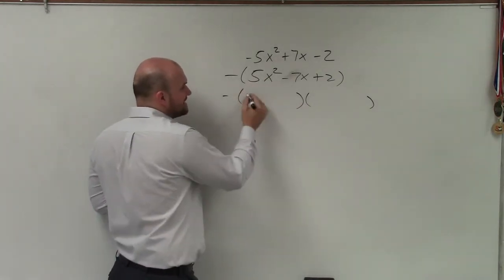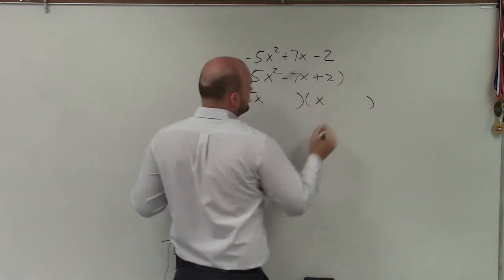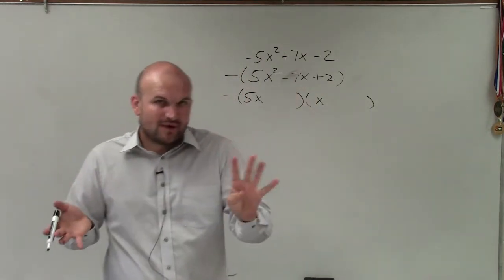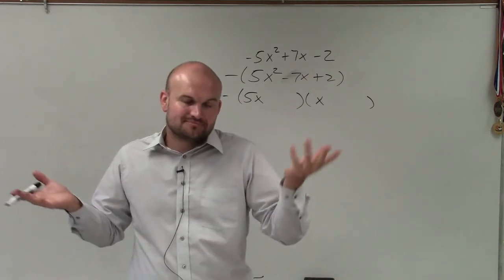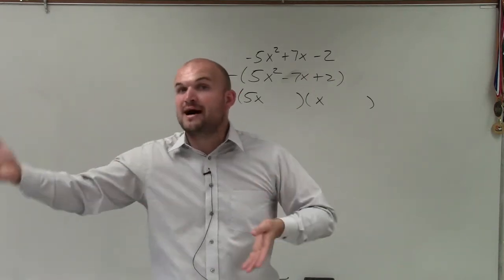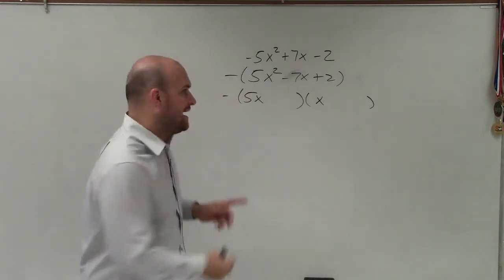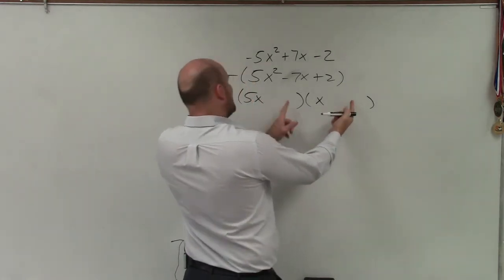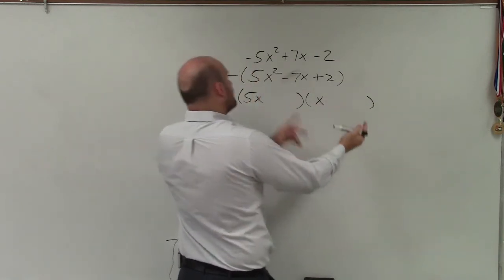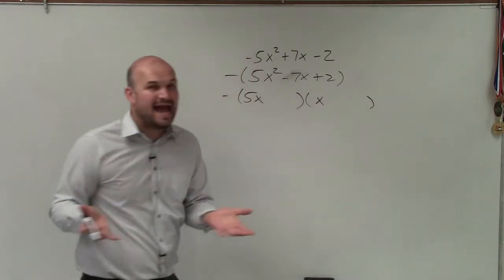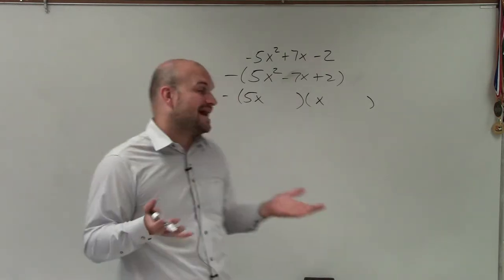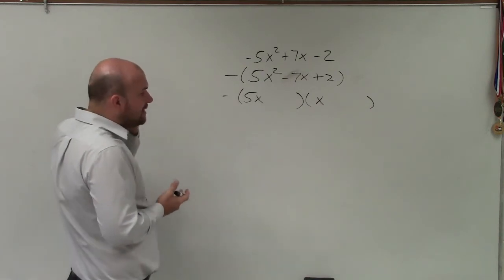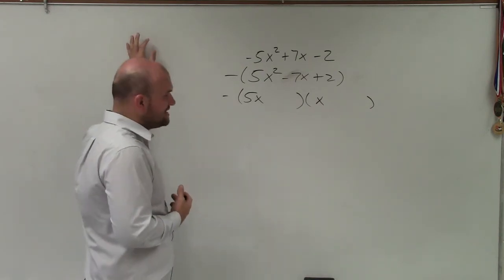I know that to get 5x², I have to have 5x times x. And to get positive 2, I have two different ways: positive 2 times positive 1, or negative 1 times negative 2. Considering the positions, that gives me four different cases to determine the correct placement.